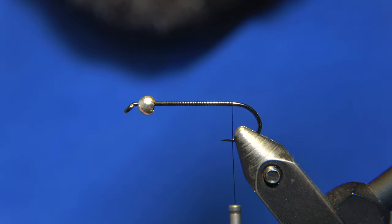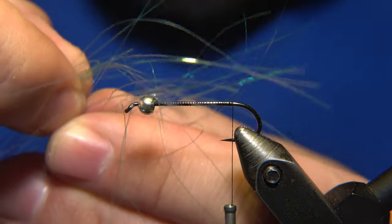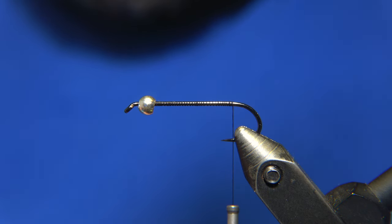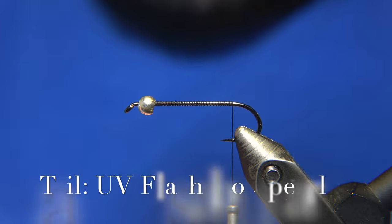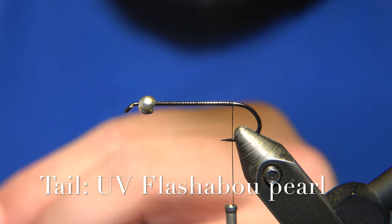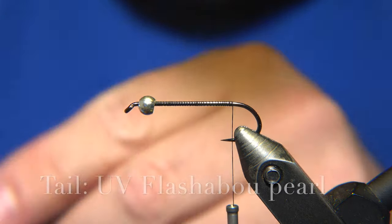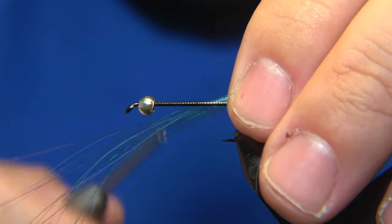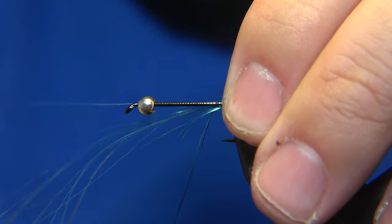For the tail of the fly, I'm using a UV pearl flashabou. This is a very simple fly. You can use this, I prefer to use the pearl, and I tie a chunk of it down like this.